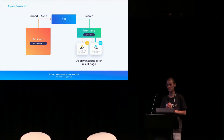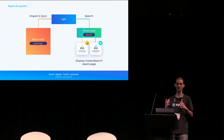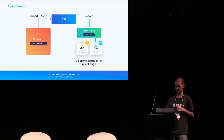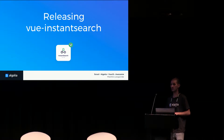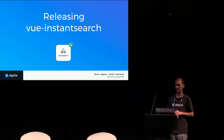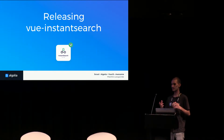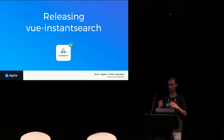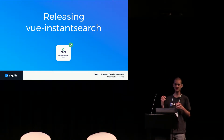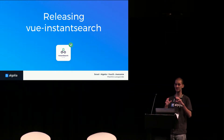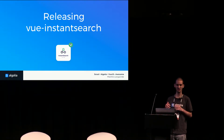Today we have two libraries: Instant Search for JavaScript, which is a vanilla JavaScript library, and a second one that integrates into React apps. And today we are releasing a third one: Vue.js Instant Search. Why is this interesting for the Laravel community? At Algolia, our goal is to make building search as fast as possible, and since last year Laravel ships with Vue.js by default. I'm going to show you that you cannot build it much faster than this.